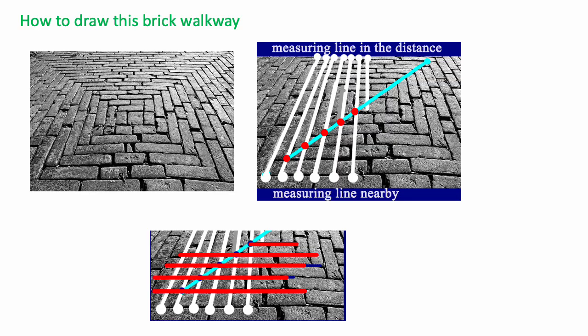So we're going to use this approach to draw this brick walkway. Now instead of using the vanishing point, we can use two measuring lines, one nearby and one in the distance, and have them with the same number of units, and then connect units together. And again, draw the diagonal across these lines. And where the diagonal crosses the white lines, you put in these horizontal red lines. And you can see that that corresponds to the pattern of the bricks.